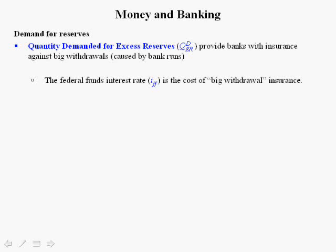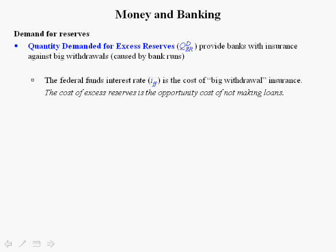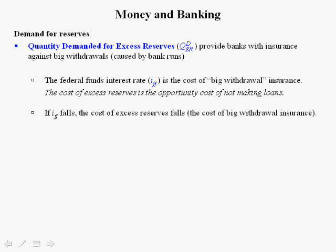The federal funds rate is the cost of big withdrawal insurance, and I denote it as IFF. The cost of excess reserves is the opportunity cost of not making loans. If a bank has lots of excess reserves at the end of the night, another bank might have trouble meeting its reserve requirement and could borrow those excess reserves, paying the federal funds rate. If you decide not to lend to that bank, you're foregoing the opportunity of earning interest. So the federal funds rate represents the opportunity cost of not making loans to other banks struggling to meet the reserve requirement.